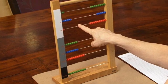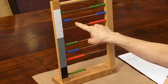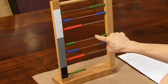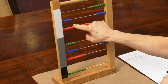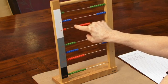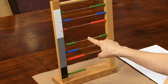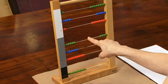3 hundreds taken 3 times is 9 hundreds, here's 1, 2, 3, 4, 5, 6, 7, 8, 9 hundreds.